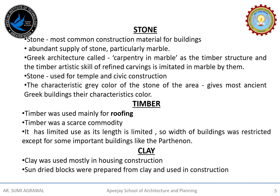The characteristic grey colour of the stone of this area gives most ancient Greek buildings their characteristic colour. Another material used is timber, but it has its limitations — it has a limited length and is used only in roofs, and that too in limited width. Only a few buildings like the Parthenon have gone beyond a certain width. The third material is clay, used in the form of sun-dried blocks, seen mostly in house construction.